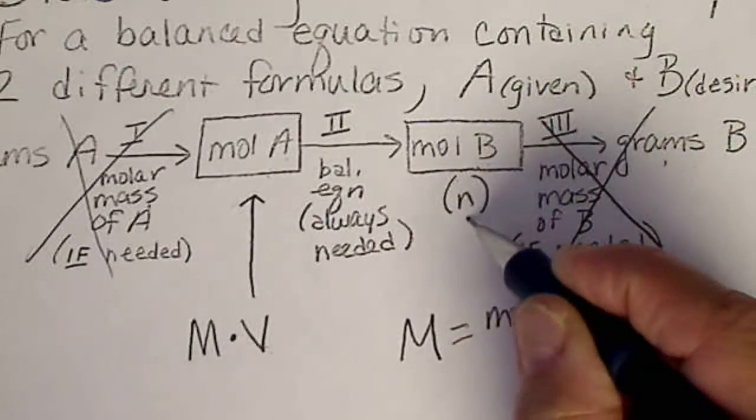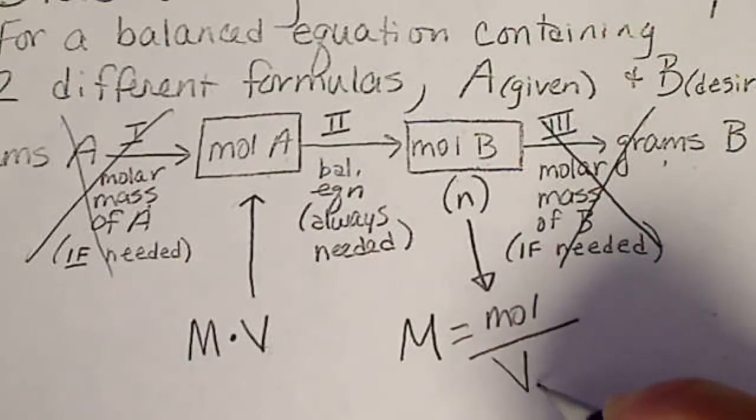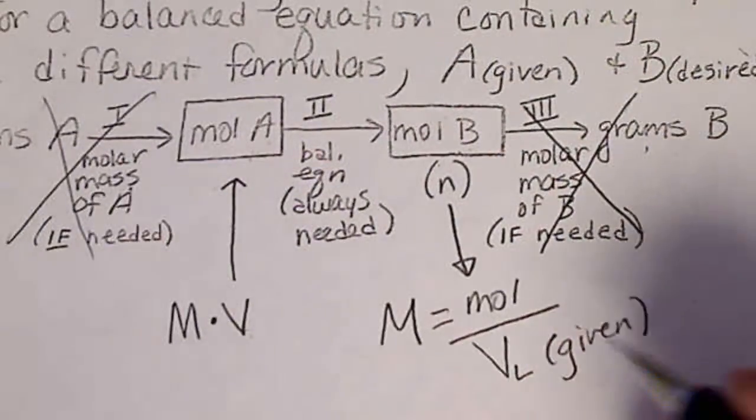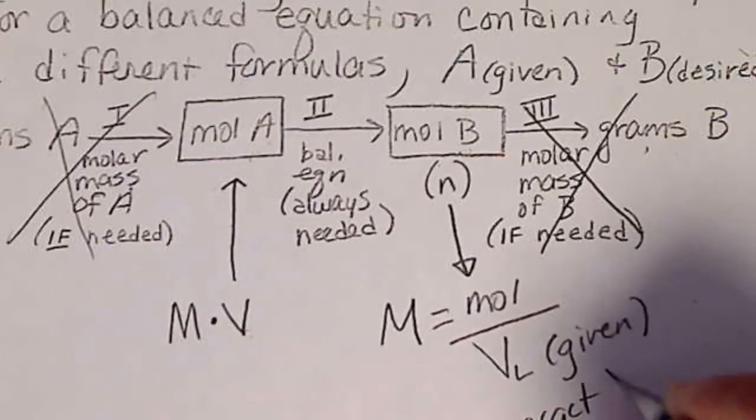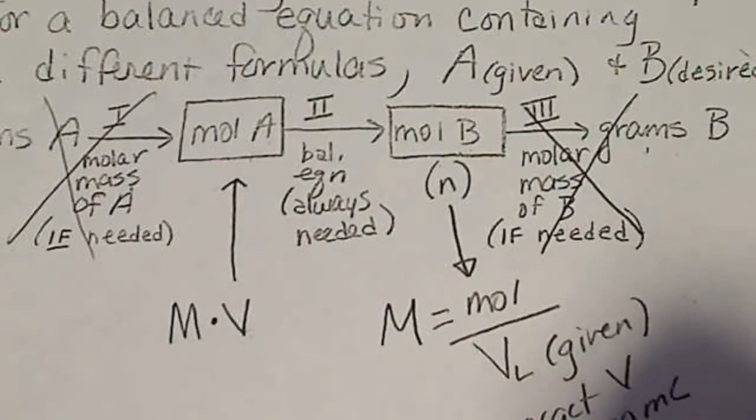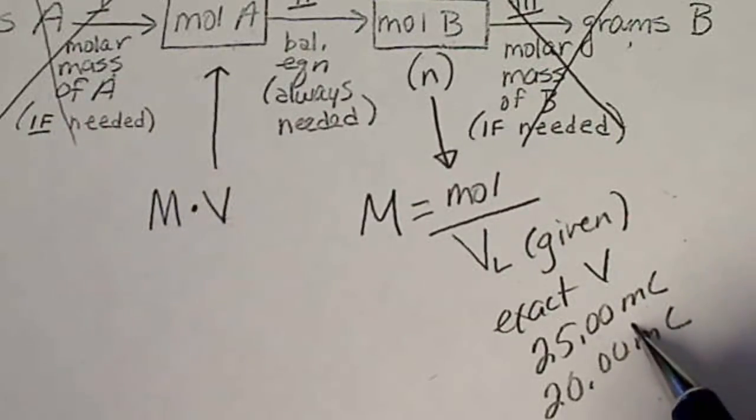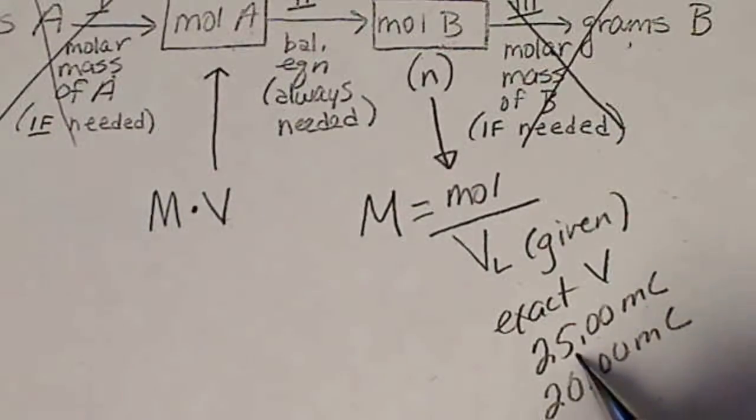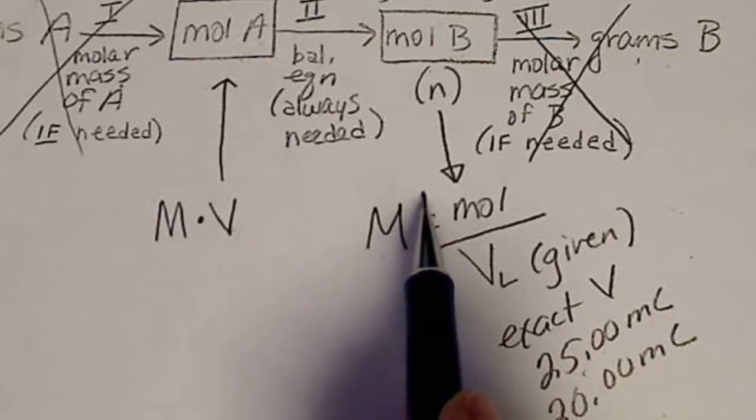So we're going to be solving for an unknown concentration. This is moles, which we just calculated, divided by the volume in liters, which has to be given in the problem. So this is always going to be the exact volume, like 25.00 milliliters or 20 milliliters. So this exact volume, we'll still have to convert it to liters. But this is the one that we measured out.